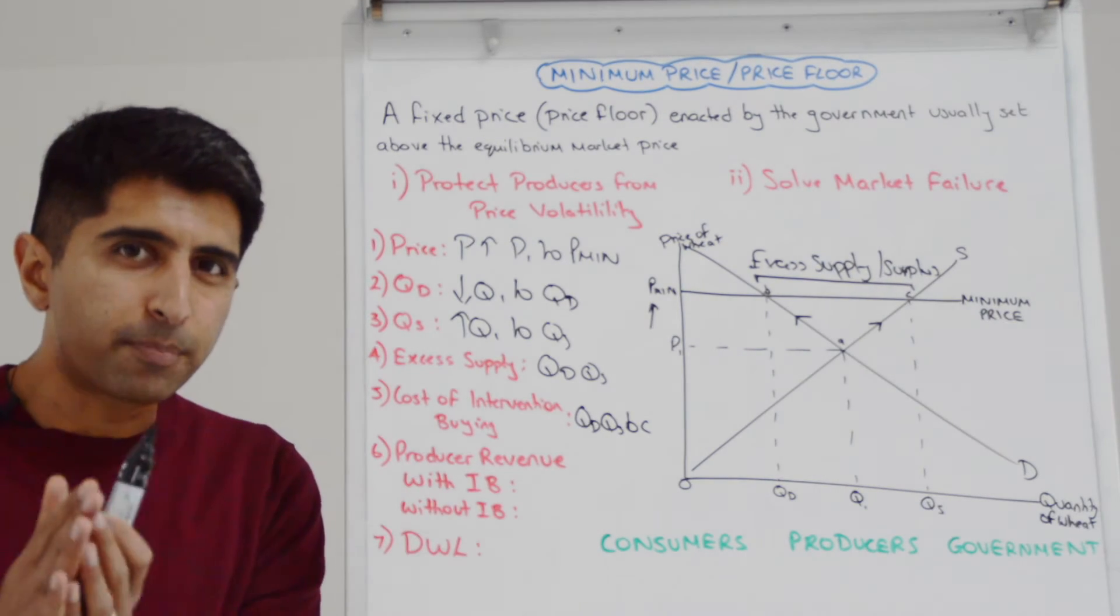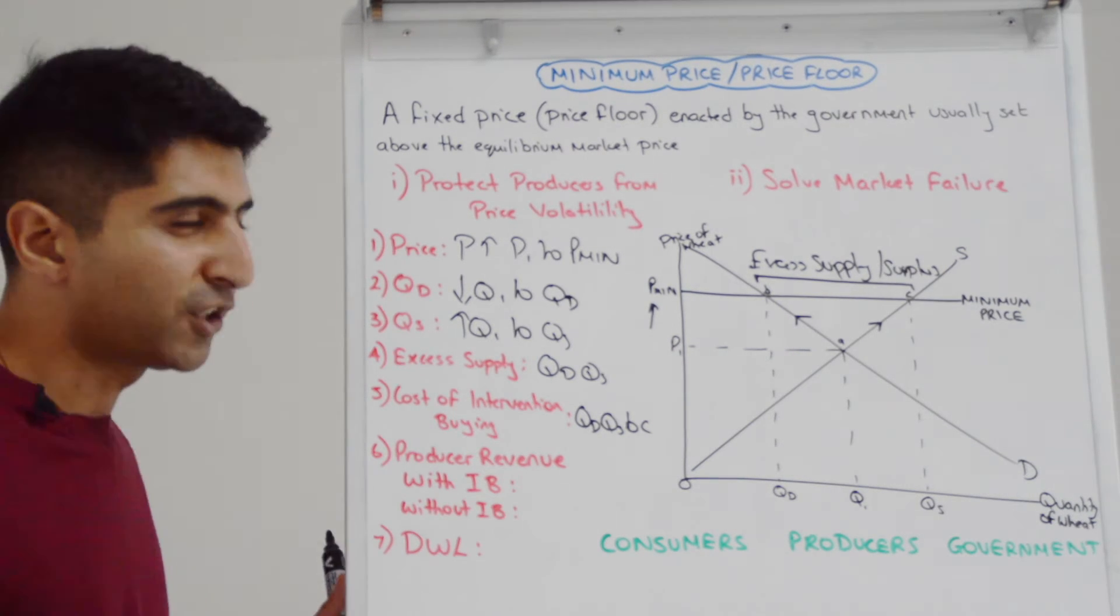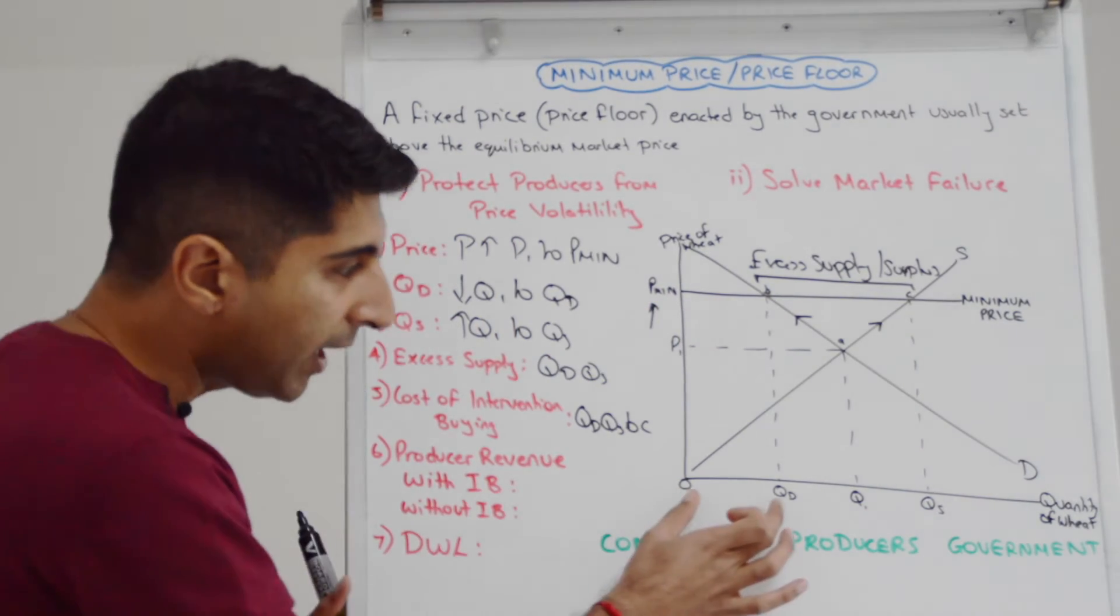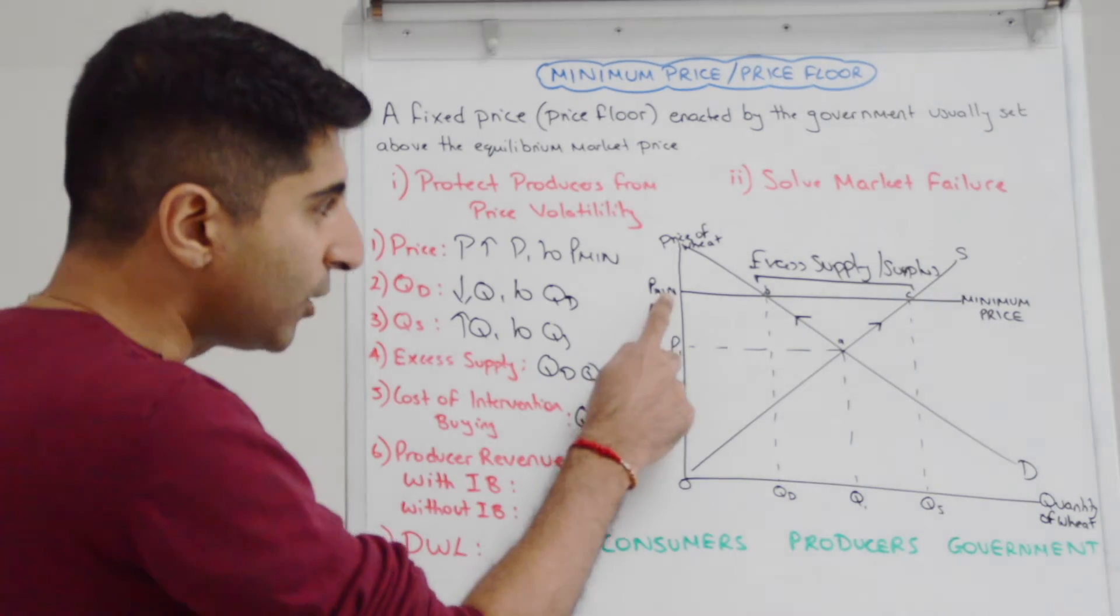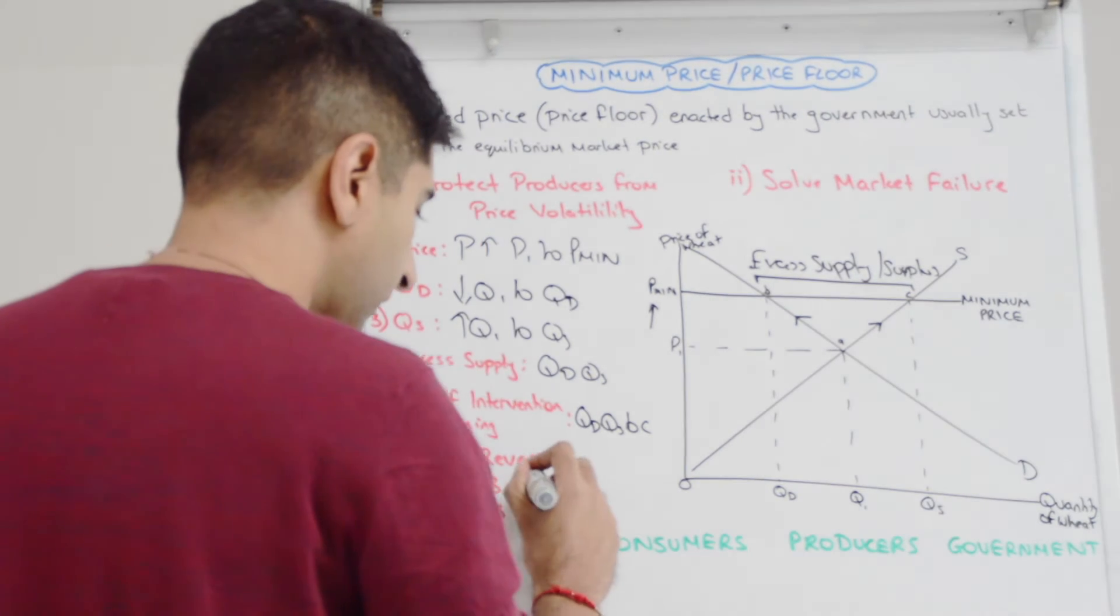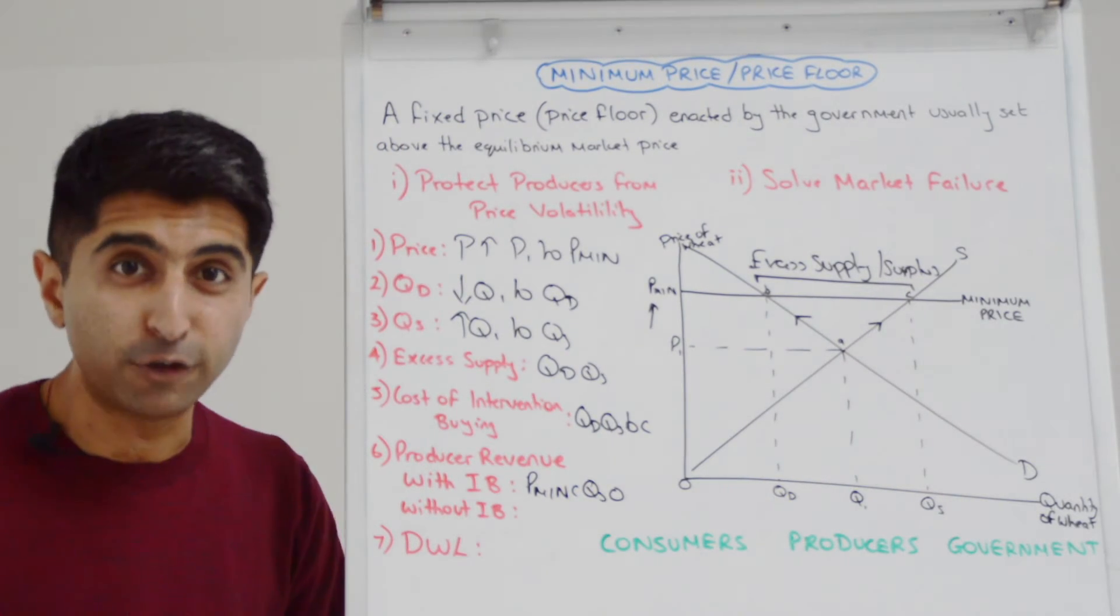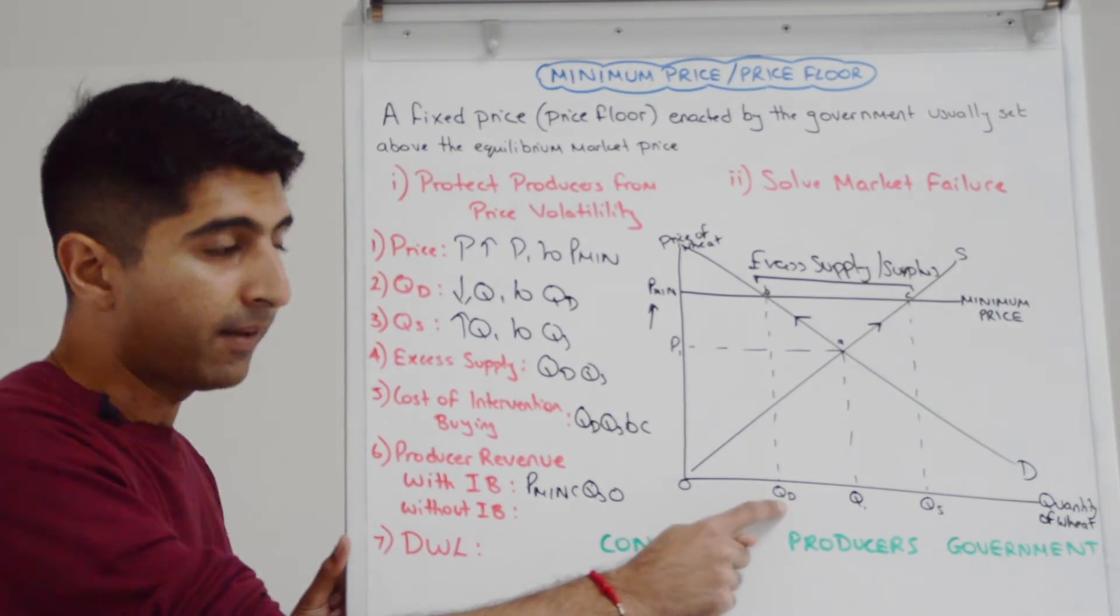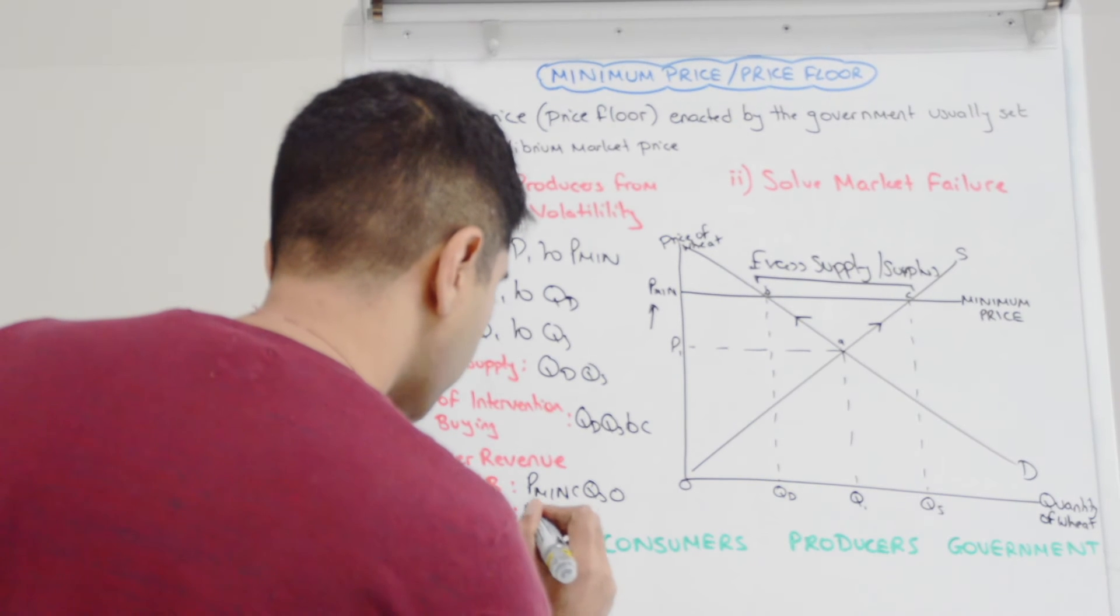What are the implications now for producer revenue? Well, the impact on producer revenue very much depends on whether there is intervention buying or not. If there is intervention buying, producers are actually selling QS at the price of PMIN. Partly, they're selling to consumers, that's up to QD, but the rest from QD to QS is being sold to the government. So overall, producer revenue is PMIN multiplied by QS. That gives us the area PMINCQS0. But if there is no intervention buying, maybe it's a developing country government, they can't afford to intervention buy. Producer revenue will only be PMIN multiplied by whatever they're selling to consumers, which is QD. So PMINBQD0, which is a much smaller area.